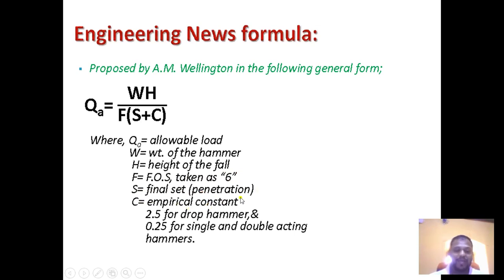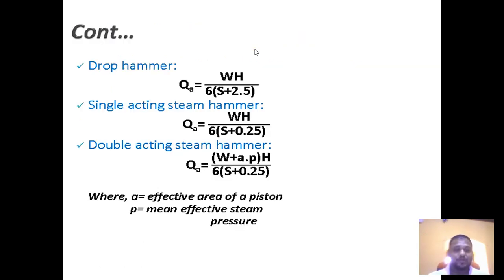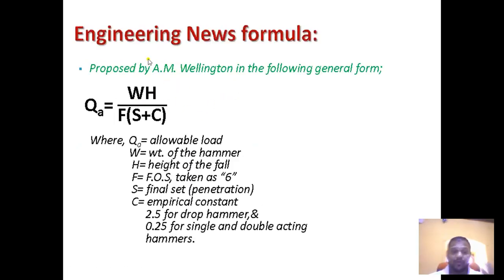C is the empirical constant, taken as 2.5 for a drop hammer and 0.25 for single and double action hammer. This is very important — the type of hammer used while driving the pile plays a very important role in the calculation of allowable load on the pile. According to the type of hammer, the Engineering News Formula changes. For a drop hammer: Qa = (W × H) / (6 × (s + 2.5)).